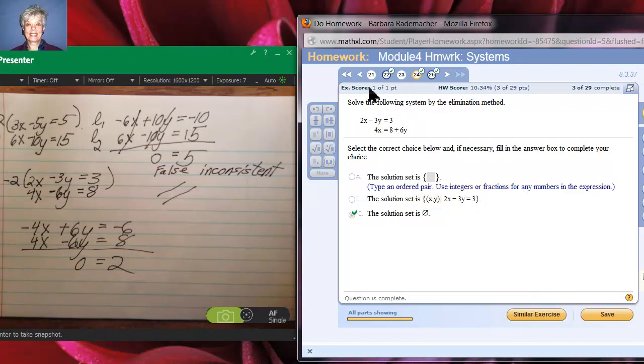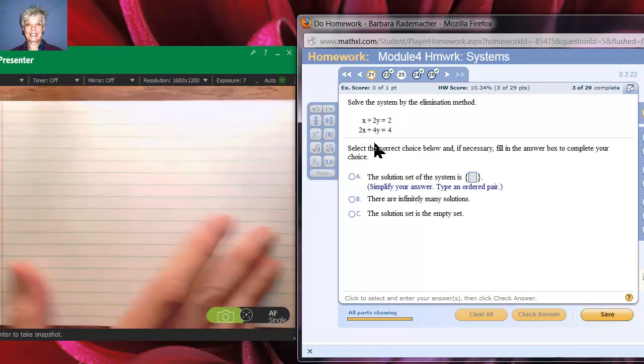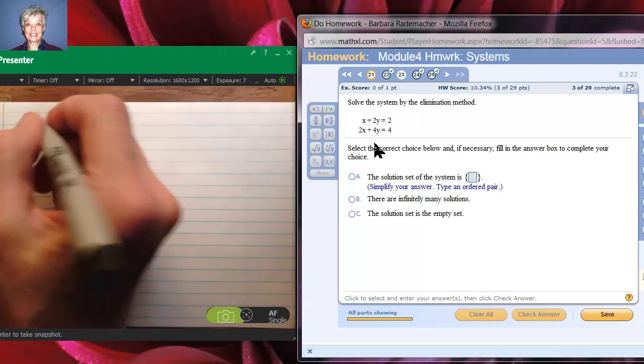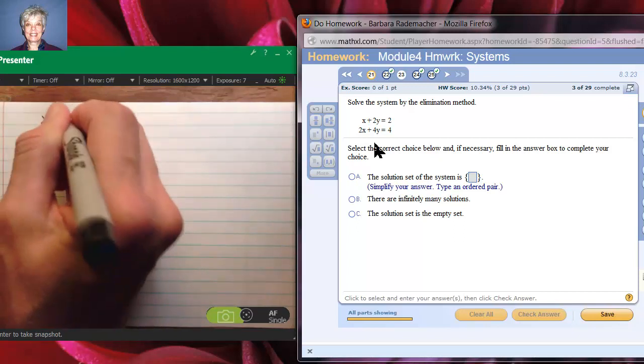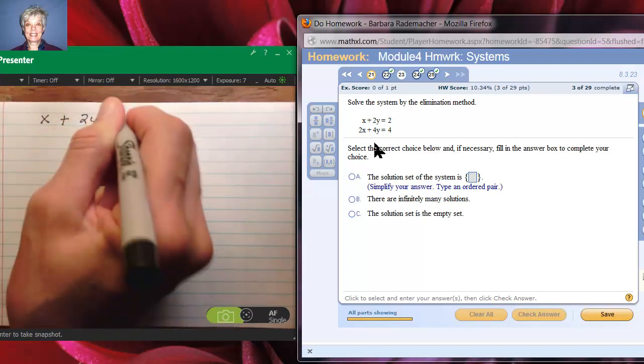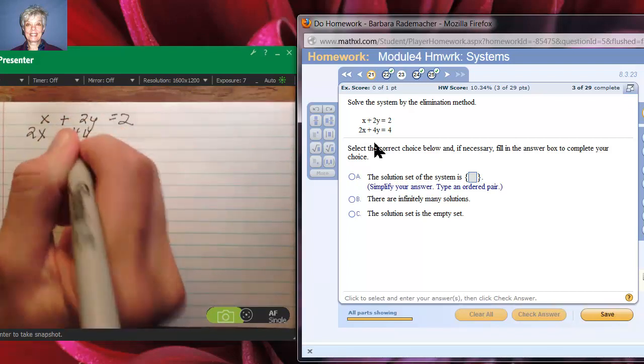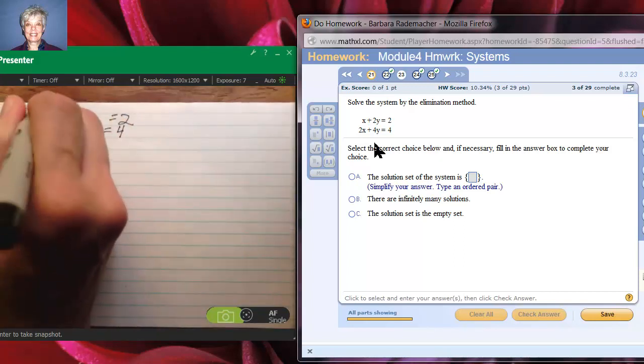Now, what I really want is to do this one. We're going to solve this by elimination because I'm hoping this will give us the other kind of system, the one with infinitely many solutions where one line is laying on the other. Let's see if this works. X plus 2y equals 2, and 2x plus 4y equals 4.